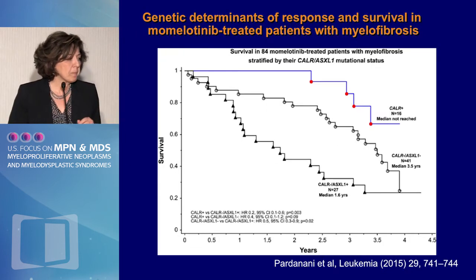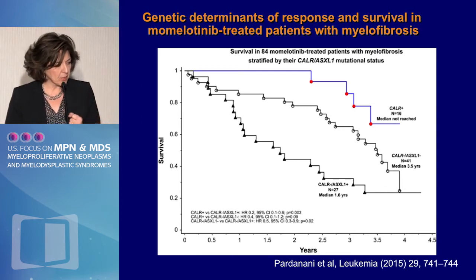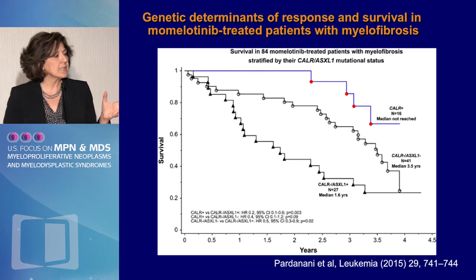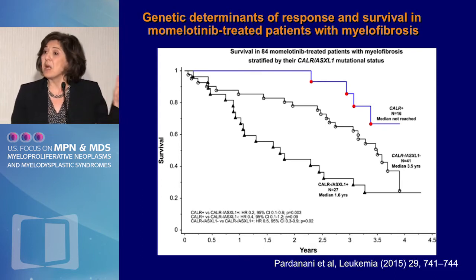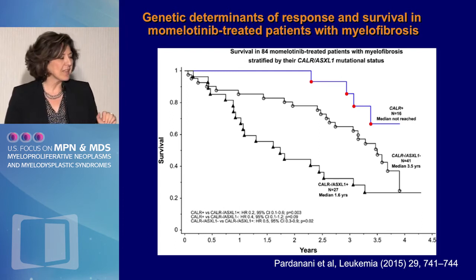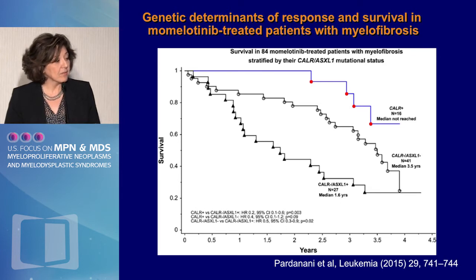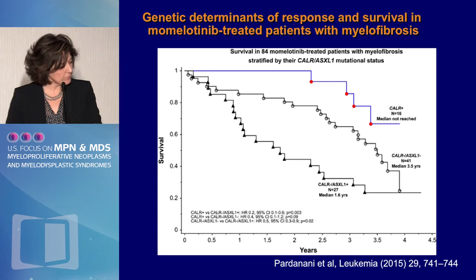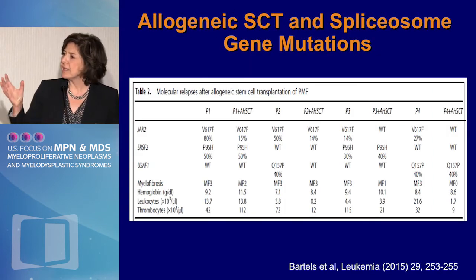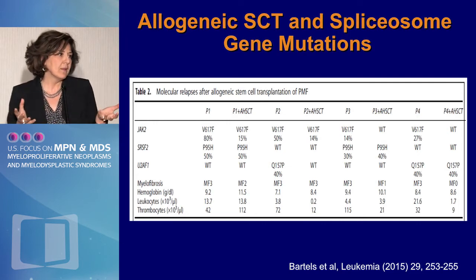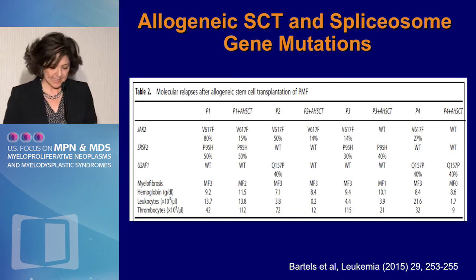The same group published data on treatment and the impact of this specific molecular profile when using momelotinib — a phase 1/2 clinical study in people with myelofibrosis, about 20% of whom were treated with a different JAK inhibitor prior to enrollment. It appeared that it didn't really matter whether they had a better or worse molecular profile relative to treatment — there was still a significant impact of ASXL1 despite therapy. To make any sense out of treatment and the impact of mutations relative to certain JAK inhibitors, you need prospective randomized head-to-head trials.